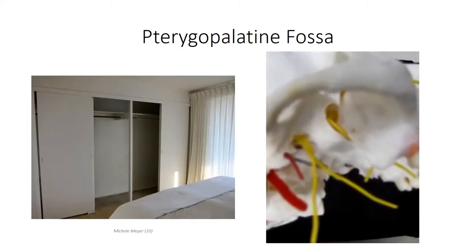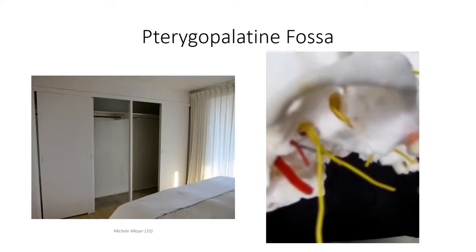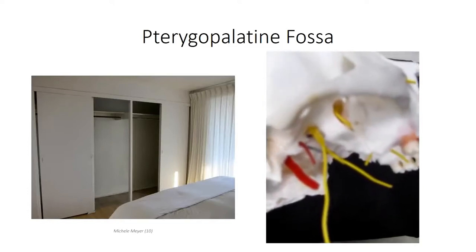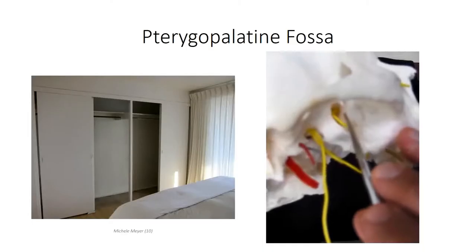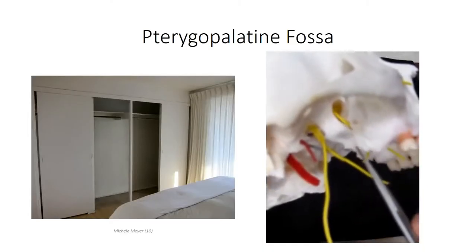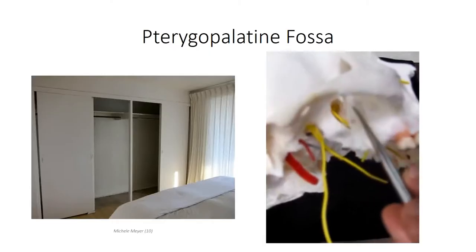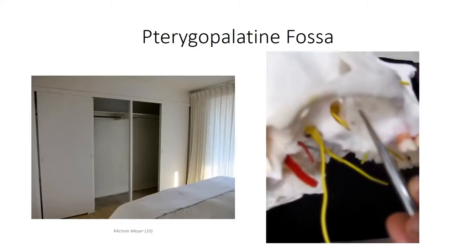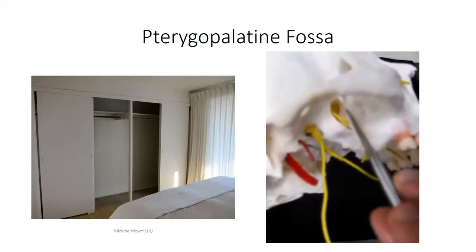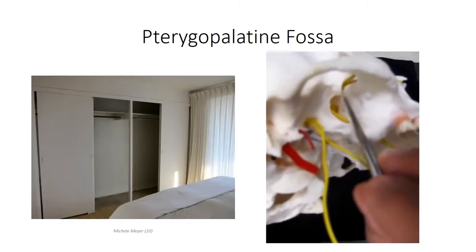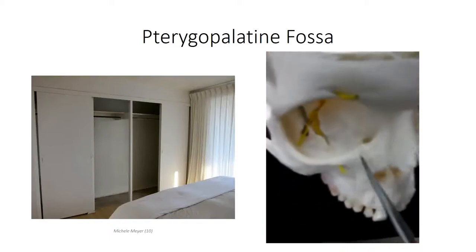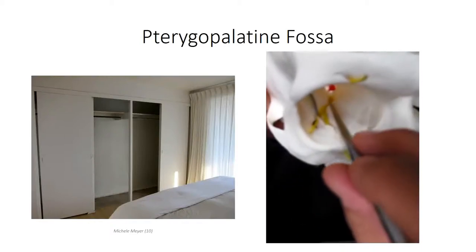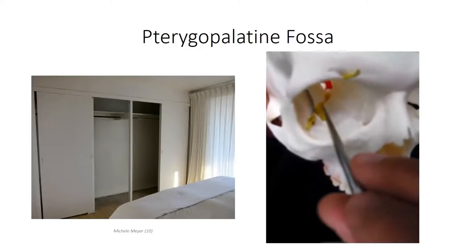Just as a standard closet has a ceiling, floor, a back wall, and two side walls, so does the pterygopalatine fossa. The only difference is that several of these walls have small foramen in them that allow for structures to pass into other regions of the skull. The anterior wall is the continuation of the infratemporal surface of the maxilla, which also makes up the anterior wall of the whole infratemporal fossa. In the pterygopalatine fossa, the inferior orbital fissure opens into the anterior wall, allowing neurovascular structures to pass from the pterygopalatine fossa to the face, between the orbit of the eye and the maxillary sinus.